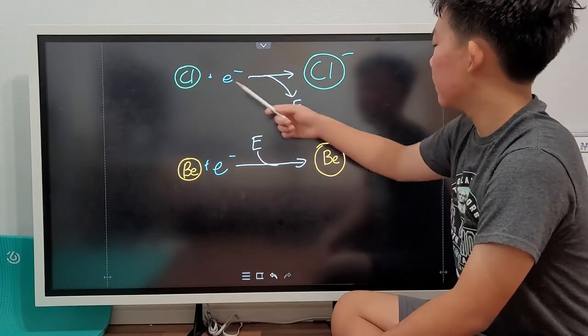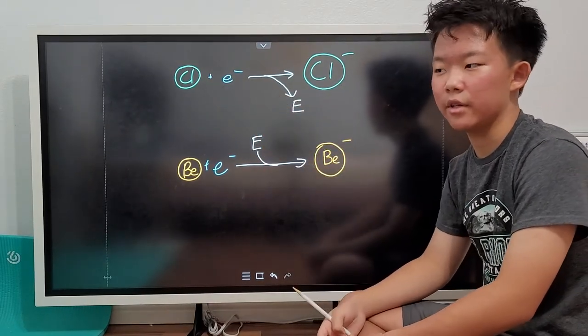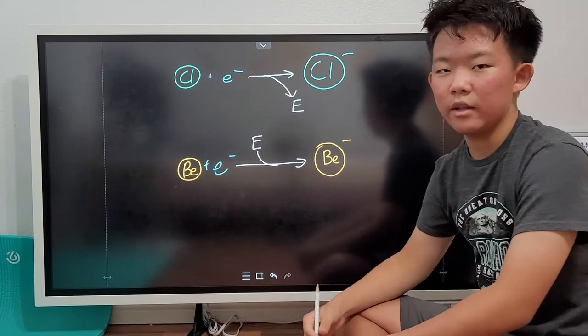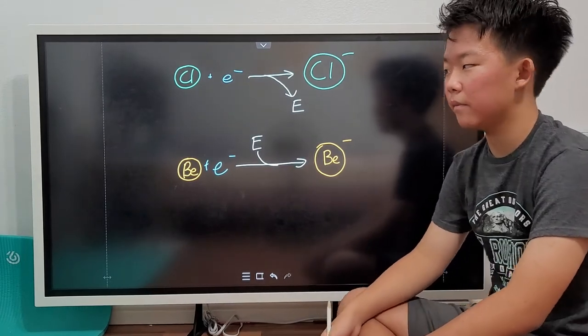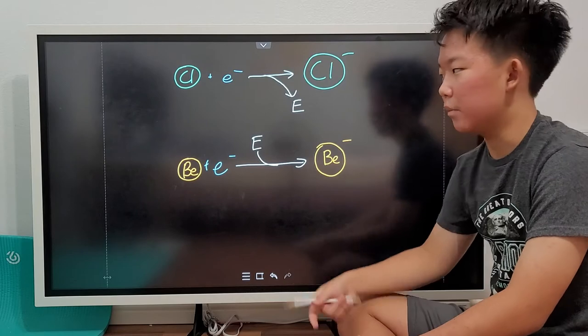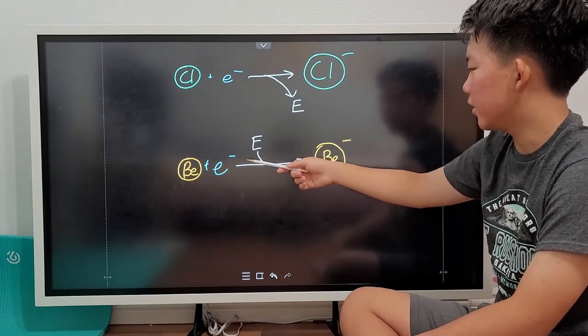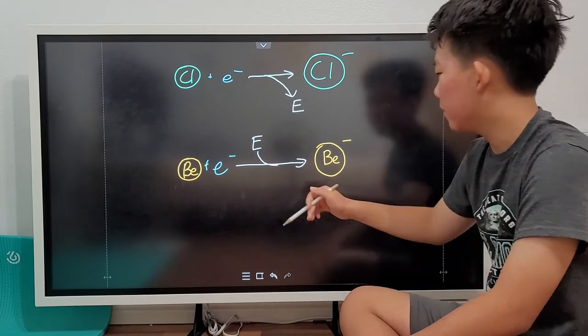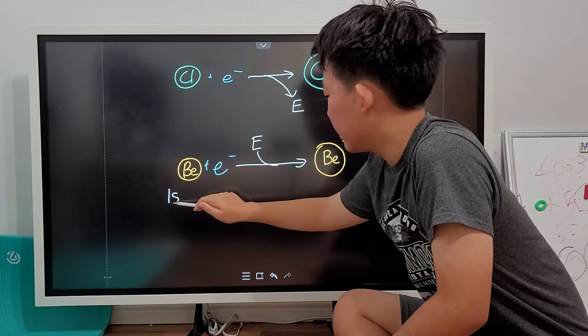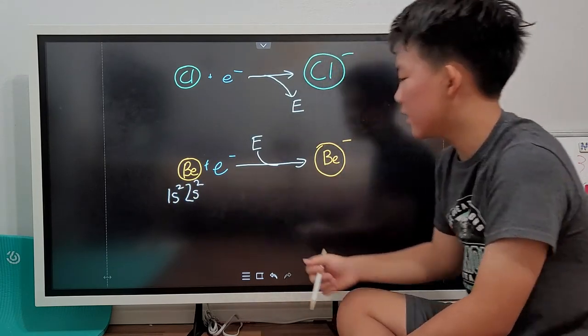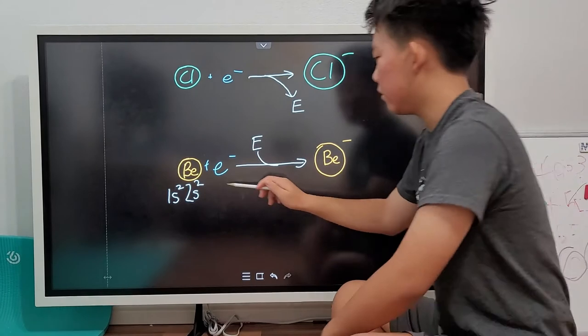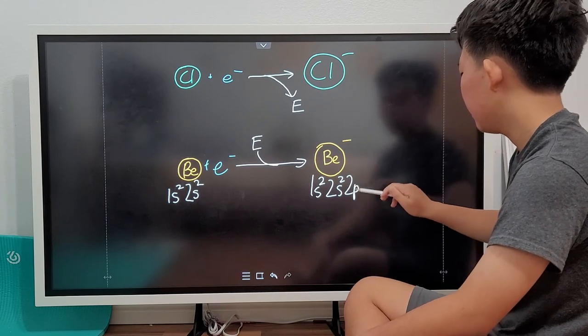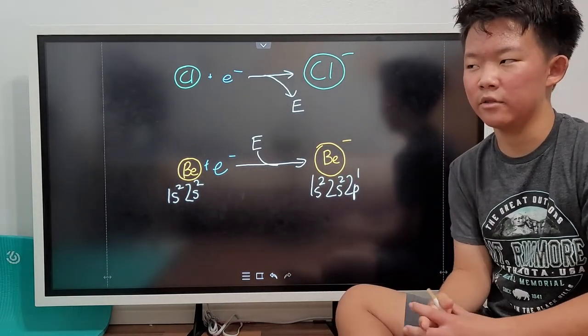So, for the case of chlorine, or some other very electronegative atom, it would be very happy if it gained an electron and give energy, and therefore ending up with chloride. However, some other elements, like beryllium here, would need energy to shove that electron into the beryllium atom. And that's because beryllium has a complete 1s and 2s orbital. So, the next orbital you put in would be the 2p orbital, but the 2p orbital is pretty high in energy, so you're going to need a lot of energy to shove that electron in.